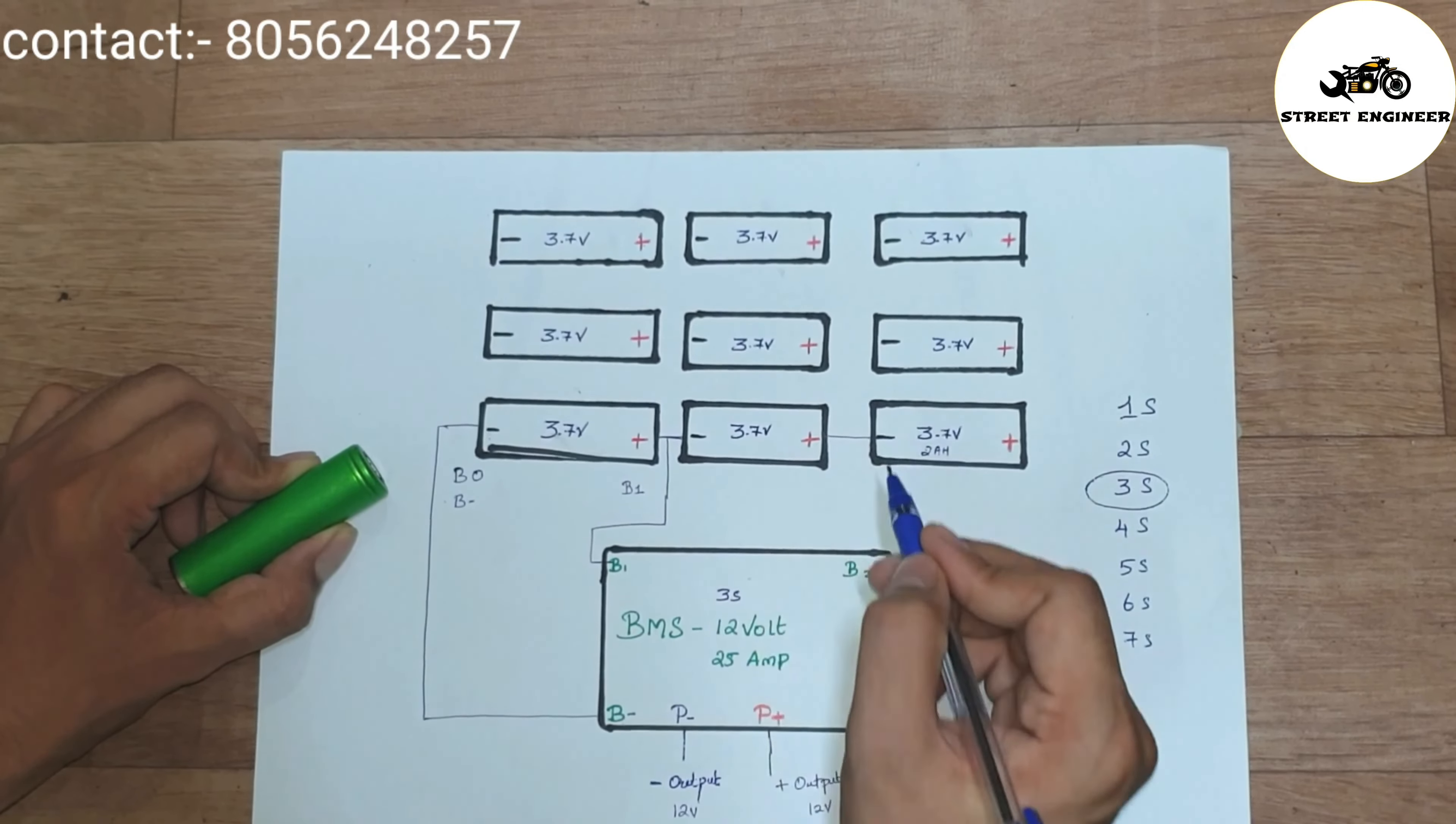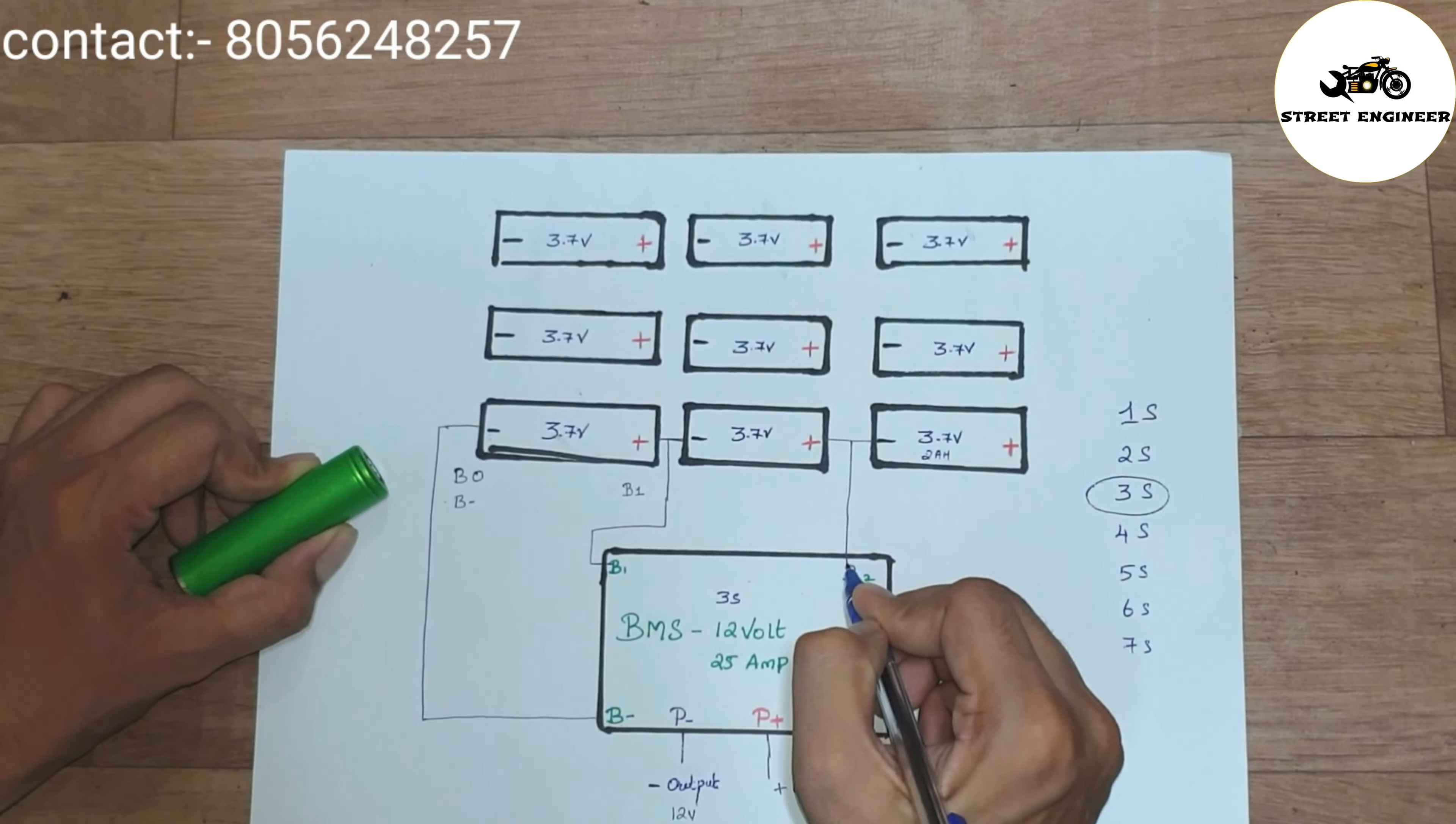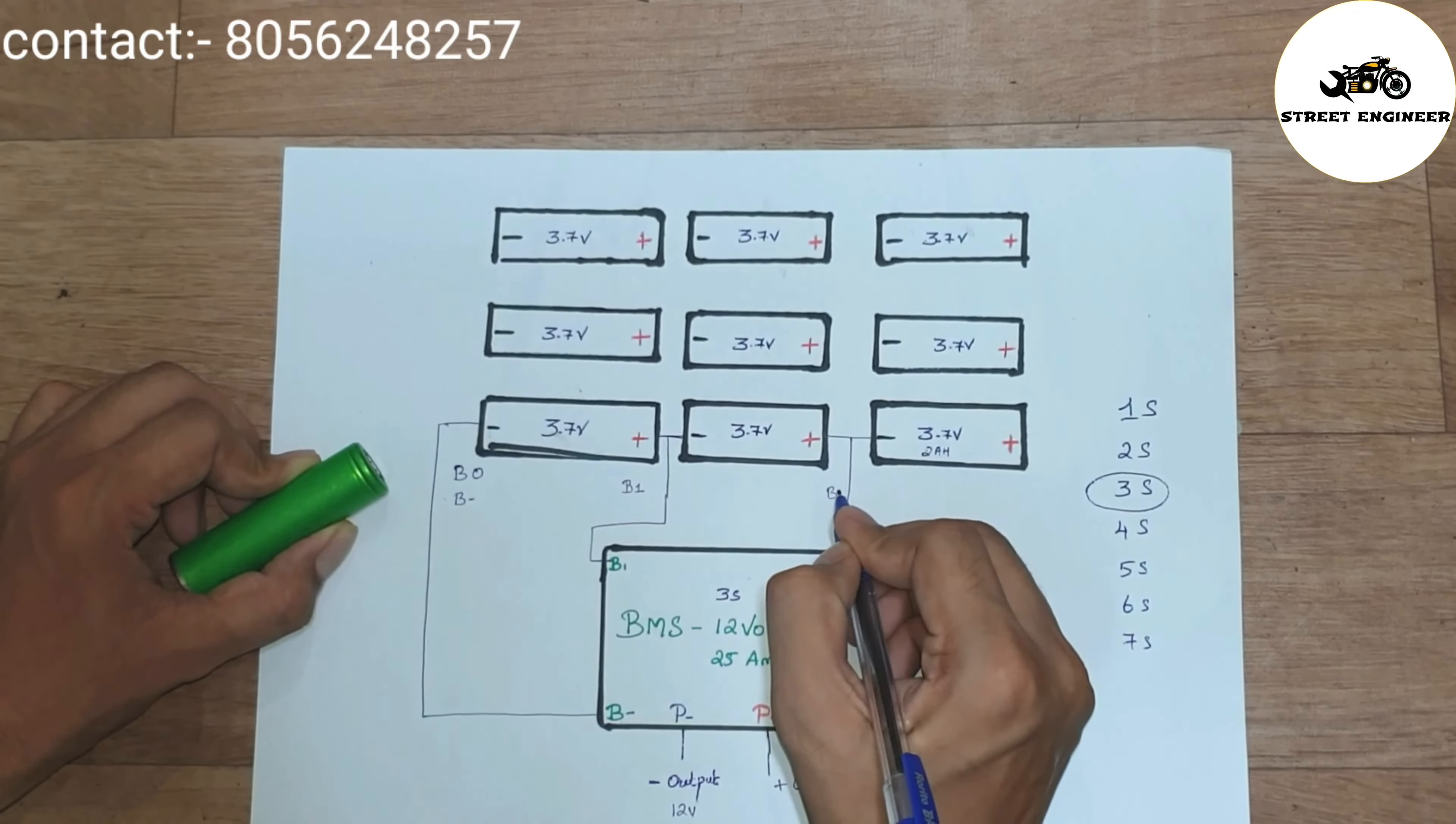Now, connect second cell positive with third cell negative and consider as a B2 and connect with BMS B2.